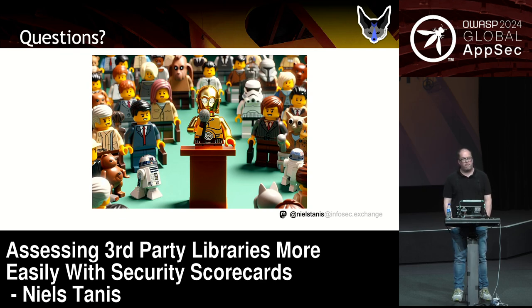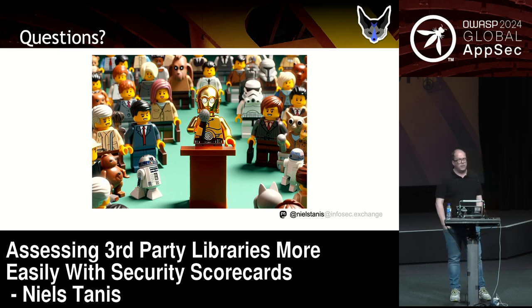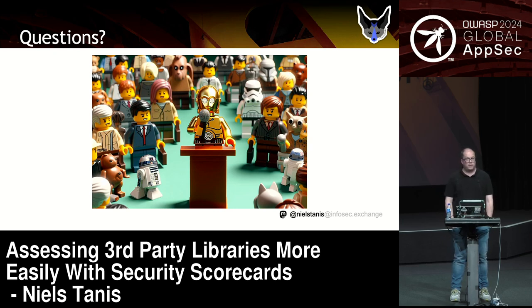Another question: what programming languages are supported by scorecards? Everything that's in GitHub. Every project with a GitHub repo will be part of a generated scorecard. The only thing is if you're doing Node.js, you need to do the correlation between the NPM package name and the GitHub repo. You can also run it on a specific commit — a version of a library done on a specific commit. And yes, including C and C++ — if the repo is there, we can look it up. The tool itself does not depend on specific package management.